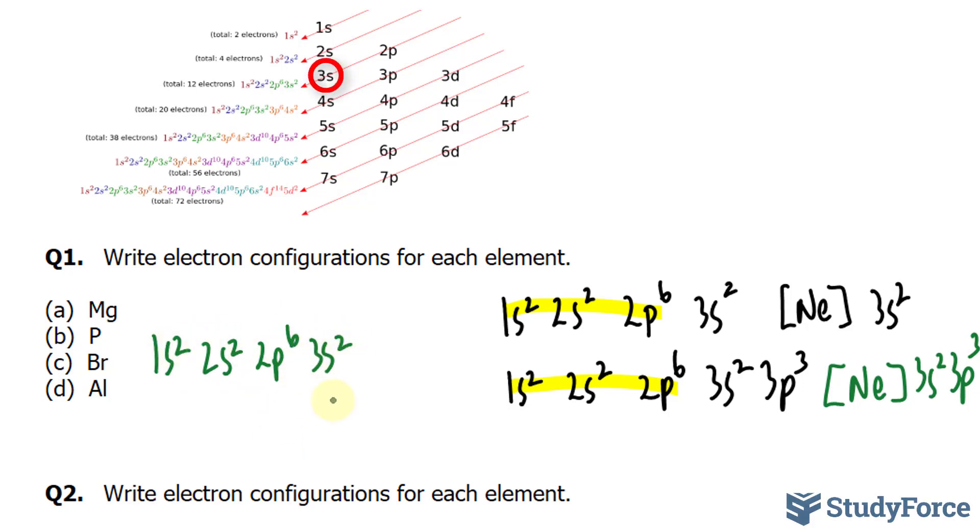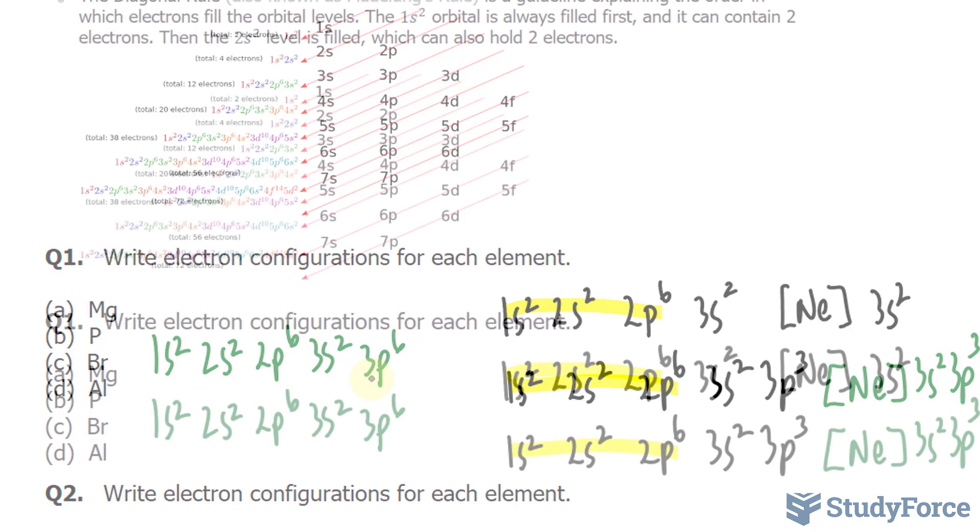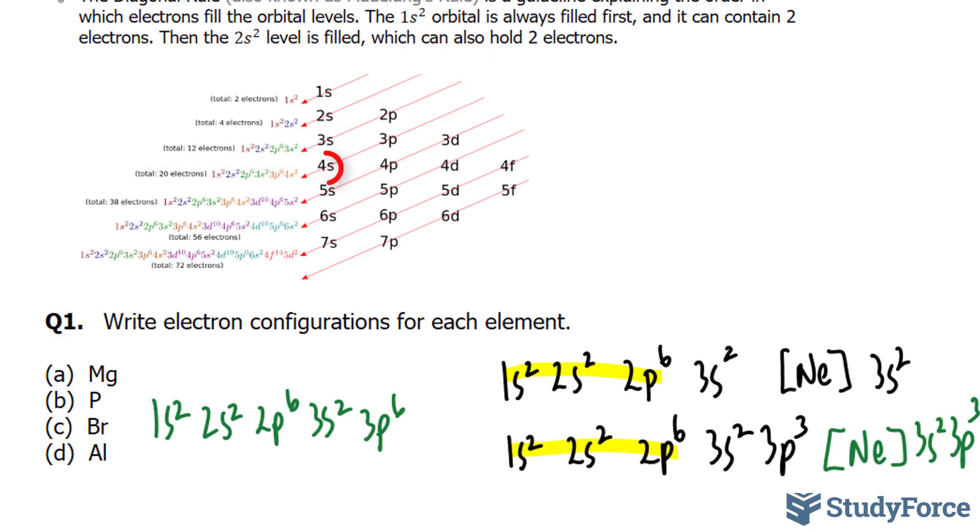Then we have 3s², 3p⁶, that's so far 18. And remember, following the order of the diagonal, after 3p comes 4s, that houses 2. Then we have 3d, that holds up to 10 electrons, and then 4p.